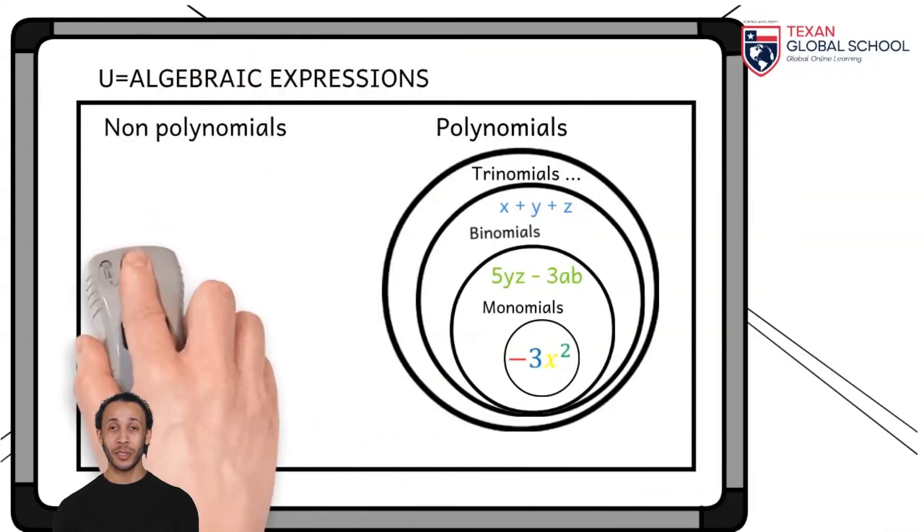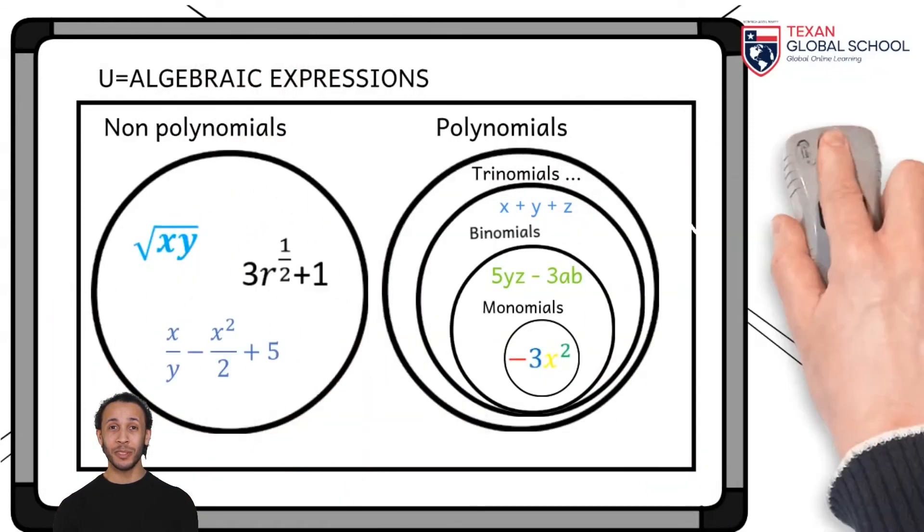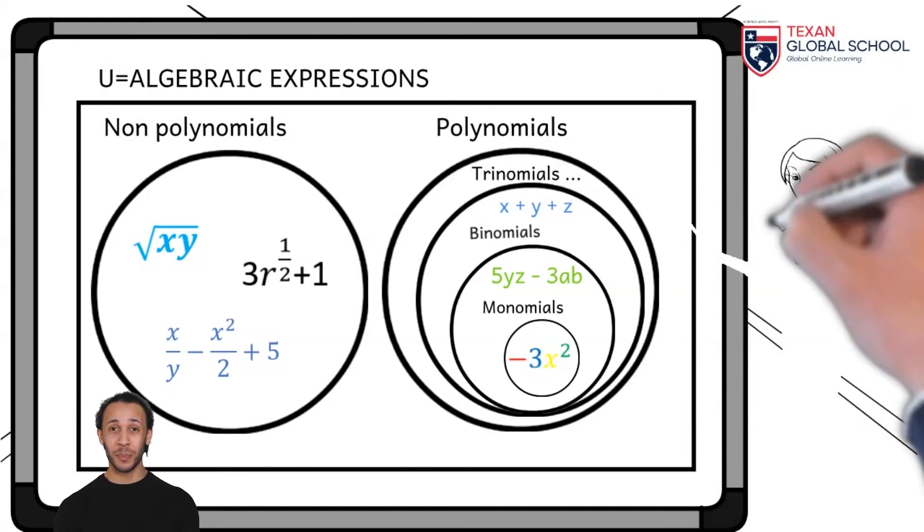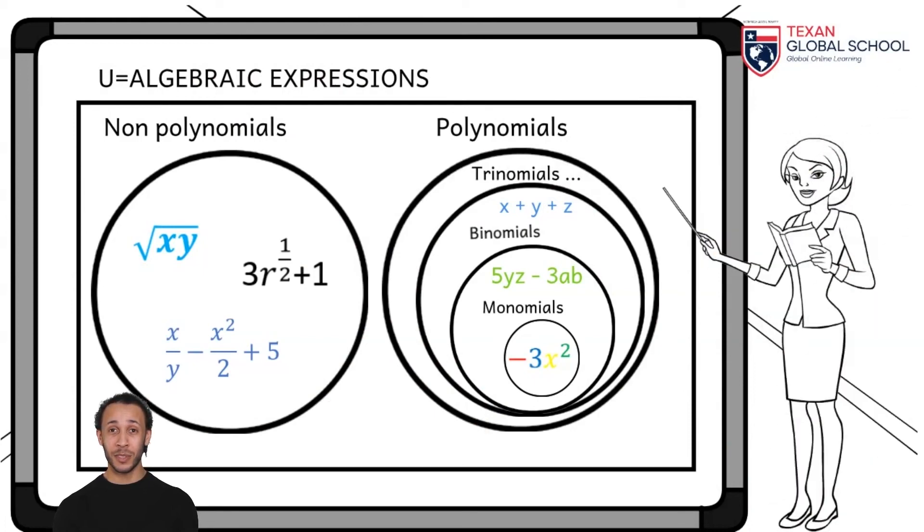The Venn diagram below summarizes the established concepts. We can see that the universe is algebraic expressions, composed of polynomials in which the variables appear only in sums, differences, or products, and non-polynomials, which include those expressions of a term, two terms or more, but in which their variables appear with quotients and radicals.